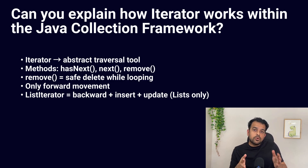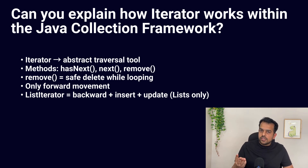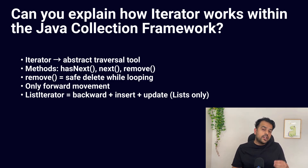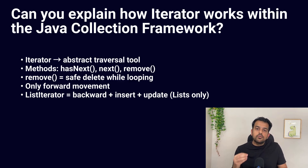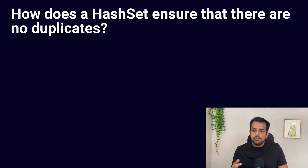Also, iterator only moves in one direction. If the interviewer asks about going backward, you should mention ListIterator, which works for List only but supports both forward and backward traversal. When you explain iterator, cover three main points: it traverses elements one by one, it hides the internal structure, and it provides hasNext(), next(), and remove() methods.